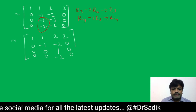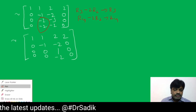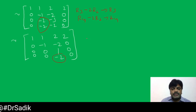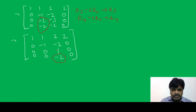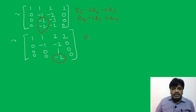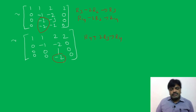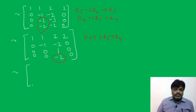Now I make the remaining element zero using R4 plus 2R3 in place of R4. The resulting echelon form matrix is: [1,1,2,2; 0,-1,-2,0; 0,0,1,0; 0,0,0,0].